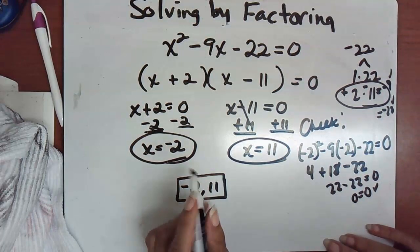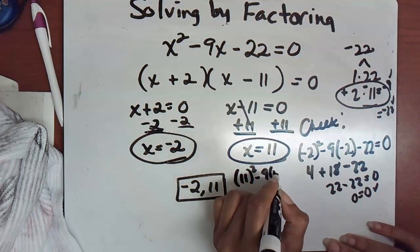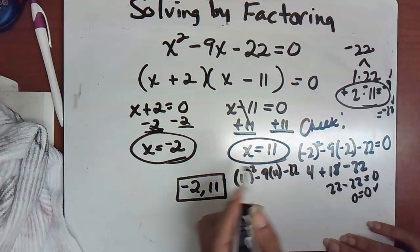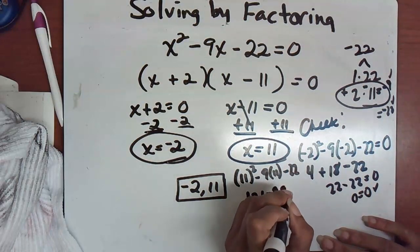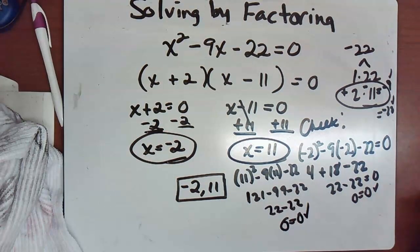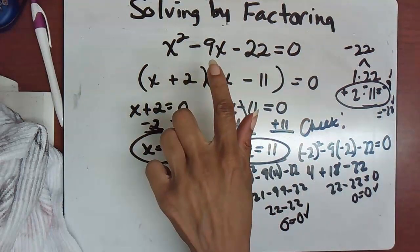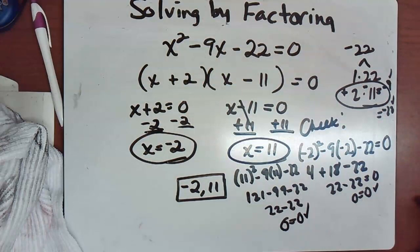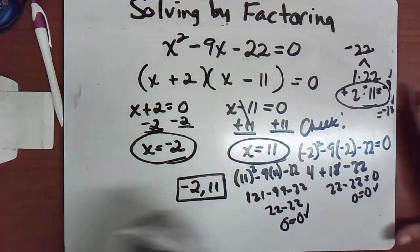Checking: substitute x = -2 into x² - 9x - 22: that gives 4 + 18 - 22 = 0 ✓. Substitute x = 11: 121 - 99 - 22 = 0 ✓. Both values produce true statements, confirming our answers of x = -2 and x = 11 are correct.